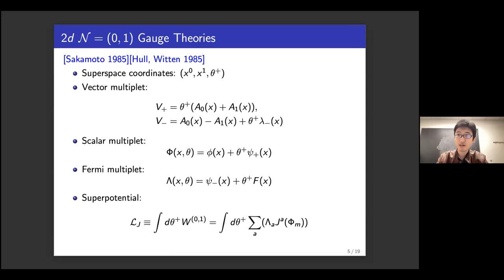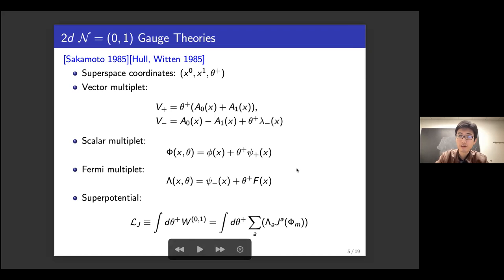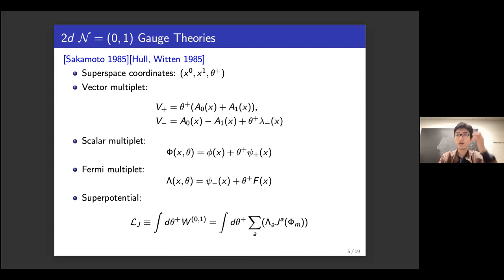For these theories you can write down a superpotential, very similar to the (0,2) J-term or to the superpotential in 4D N=1 theory. It is an interaction between Fermi multiplets and scalar multiplets. Using index a to denote different Fermi multiplets, for each Fermi multiplet you write down a scalar function of the scalar multiplets as the coupling term between the Fermi multiplet and the scalar multiplets.